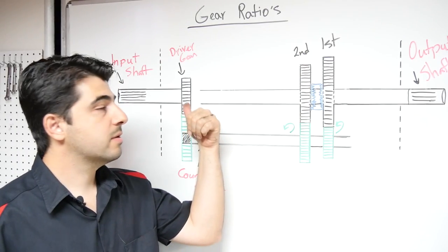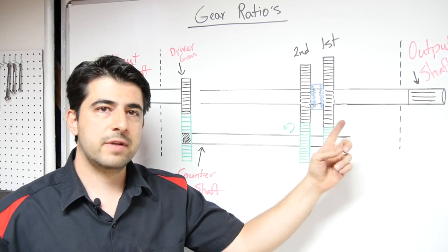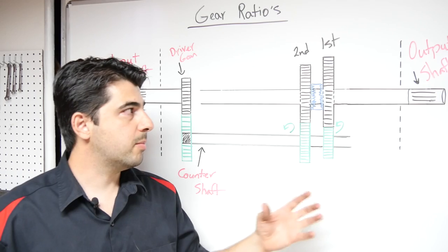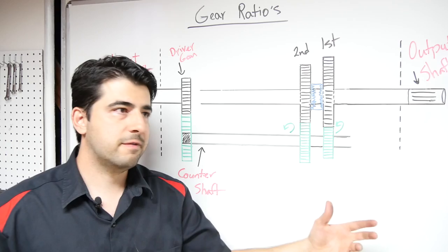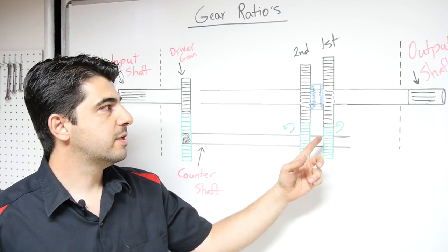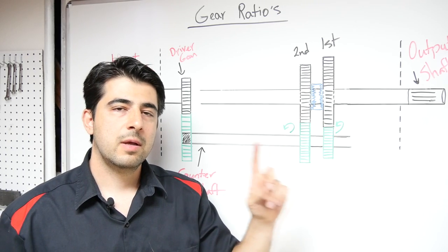So if you line up this smaller gear or driver gear to this larger gear, let's call this the driven gear, you can produce a lot more torque by turning this to our output shaft. Now the trade-off is that it takes more revolutions for this smaller gear to turn this first gear one revolution.